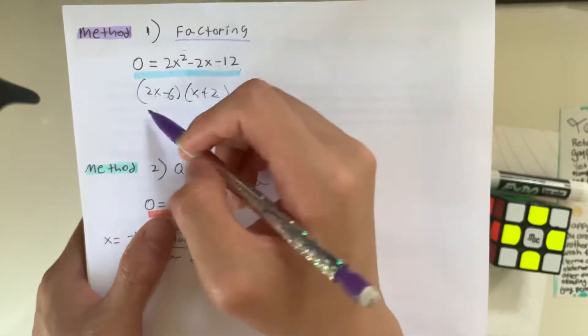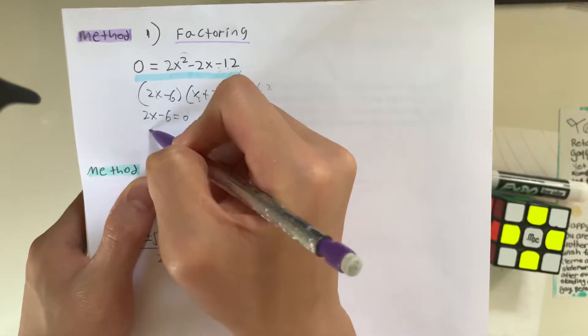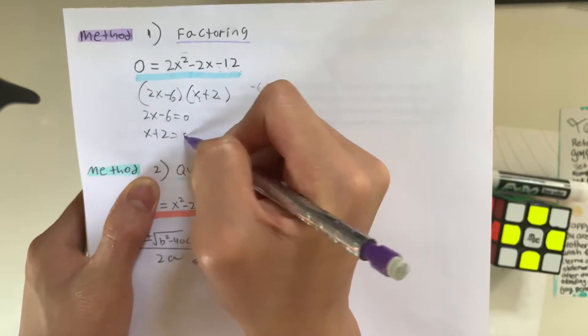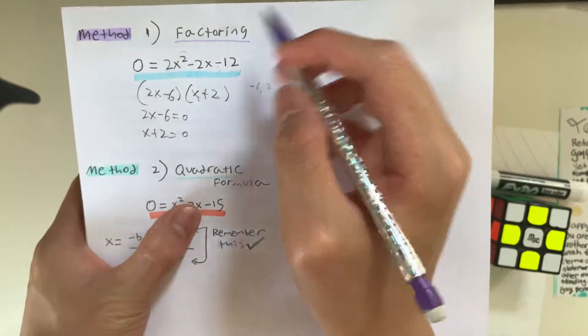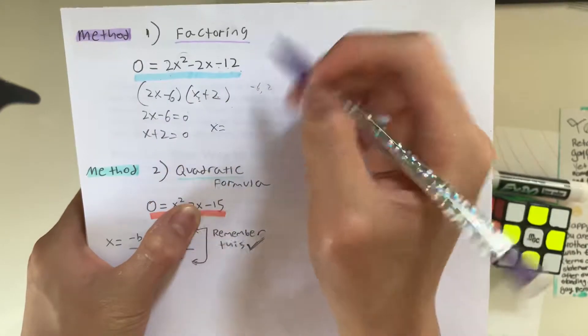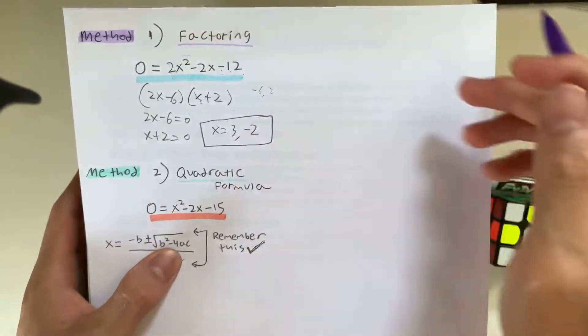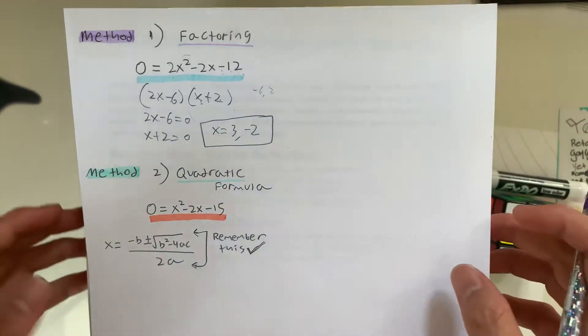Okay, so, because now we have factored this, we make the two equations. 2x minus 6 is equal to 0, and x plus 2 is equal to 0. If you guys solve this, you'll get x is equal to 3 and negative 2. So, that's going to be our answer, and that's how you're going to do factoring.